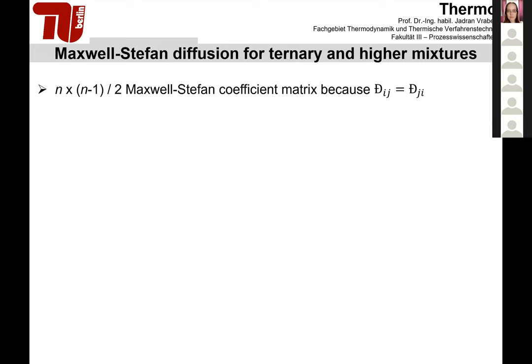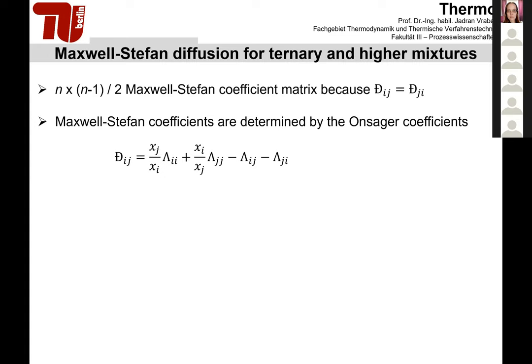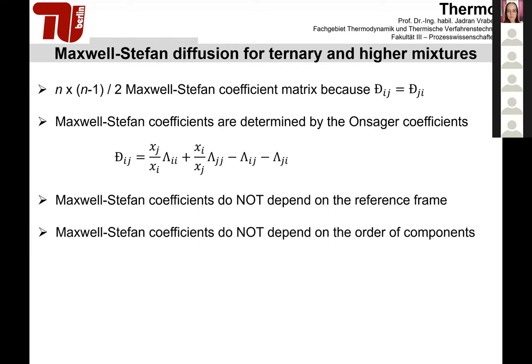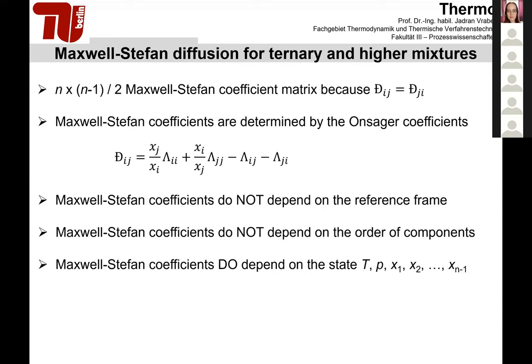In the Maxwell-Stefan approach for mixtures with three or more components, we have fewer coefficients: n(n−1)/2, because the Onsager reciprocity holds, making the matrix smaller. These Maxwell-Stefan coefficients are still determined by the Onsager coefficients in the same way, regardless of the number of components. Importantly, Maxwell-Stefan coefficients do not depend on the reference frame—since we look at mutual velocities—and they do not depend on the order of components, though they do depend on state and composition.